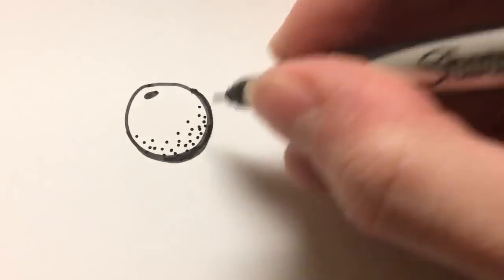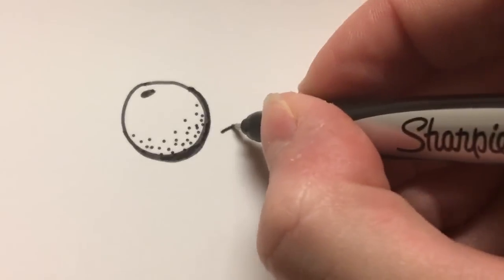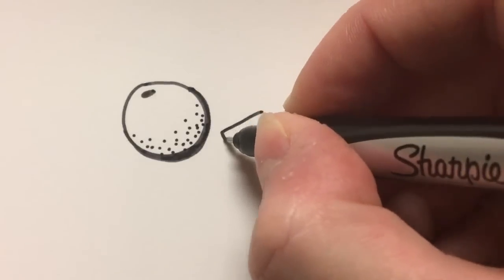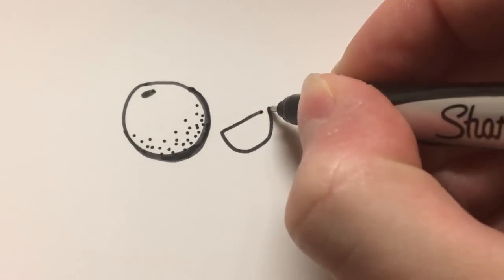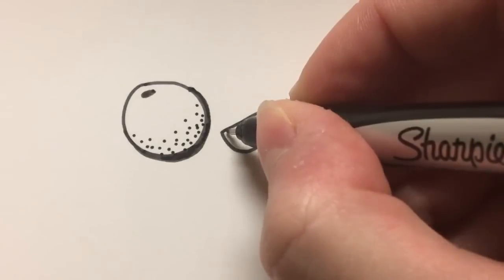Next to the orange, I'm going to add a cute little orange slice. So I'm going to draw a slanted line and a curve to it.